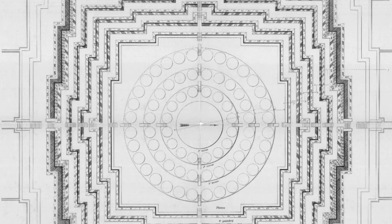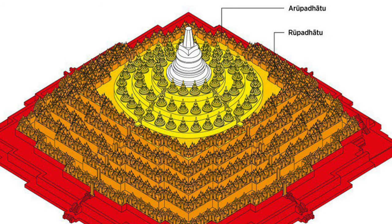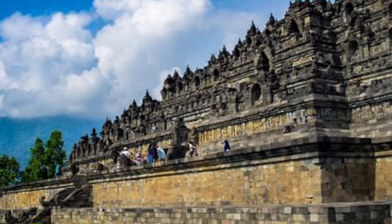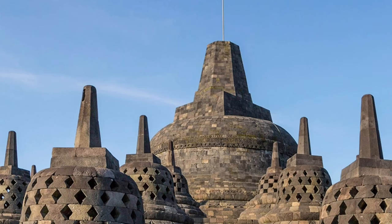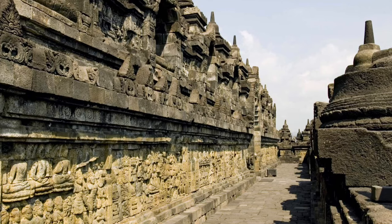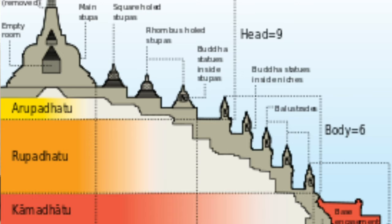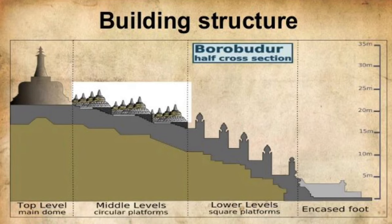Each of the monument's three main levels represents a stage on the way to the bodhisattva ideal, symbolizing the spiritual journey. Built with about 2 million cubic feet of grey volcanic stone, Borobudur encloses a small hill and is shaped like a stepped pyramid with three major levels. The centre, 115 feet above the base, consists of a large individual stupa. At the lowest level, which is partially hidden, a hundred reliefs illustrate Kama Dhatu, meaning the realm of desires and feelings. The upper level illustrates Arupa Dhatu, meaning the realm of formlessness and detachment from the physical world.